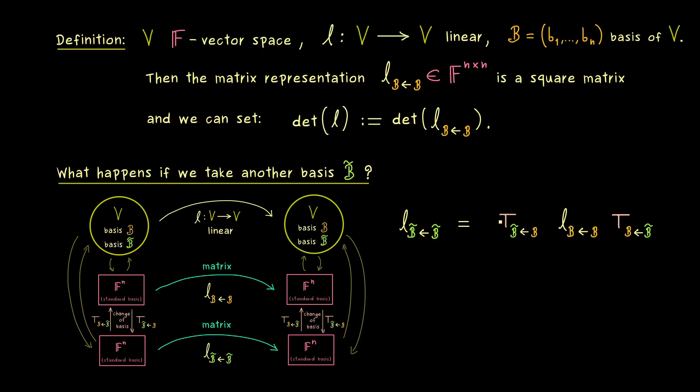And moreover, if we exchange the basis entries here on the right hand side, we get the inverse of this change of basis matrix. Therefore, as we have learned before, this formula tells us that the two matrix representations are similar matrices. And now it's just a very important fact, that similar matrices always have the same determinant.